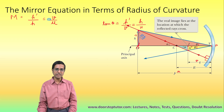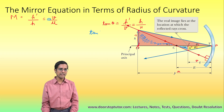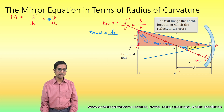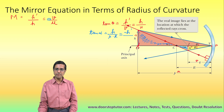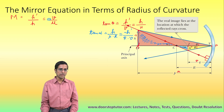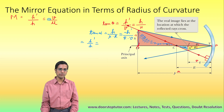Now consider the triangle with angle alpha and the smaller triangle also with angle alpha. For the larger triangle, tan alpha equals H over OC, where OC is U minus R. For the smaller triangle, tan alpha equals negative H dash over CI, where CI is R minus V. This gives us H dash over H equals V minus R over U minus R, which equals minus V over U.